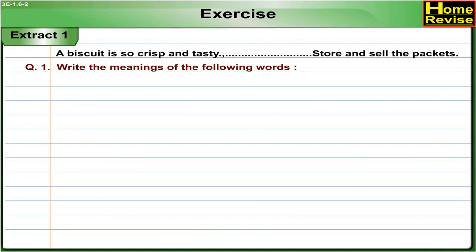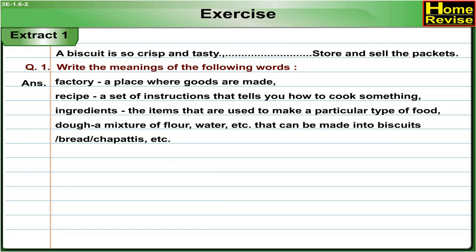Question 1: Write the meanings of the following words. Answer — The meanings of the following words are: Factory: a place where goods are made. Recipe: a set of instructions that tells you how to cook something. Ingredients: the items that are used to make a particular type of food.